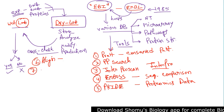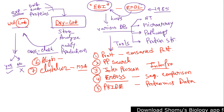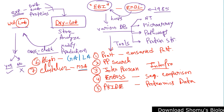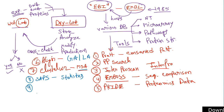ClustalW2 is a tool for multiple sequence alignment — MSA. There are different types of alignments which we'll discuss in a separate lecture. ALIGN does global and local alignment, while ClustalW2 handles multiple sequence alignment. We also have SAPS, which stands for Statistics of Protein Sequence — it's a statistical tool.